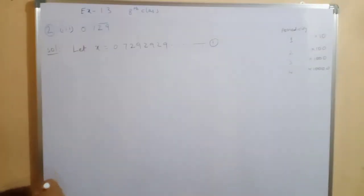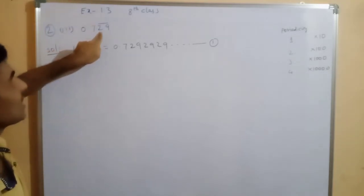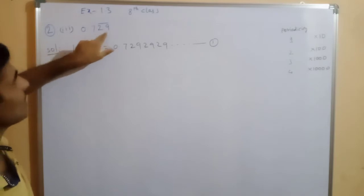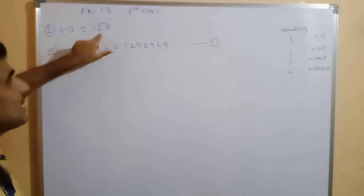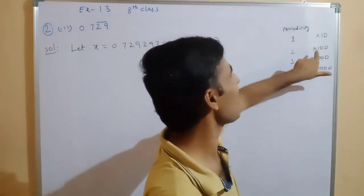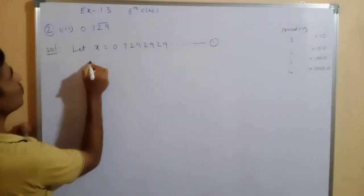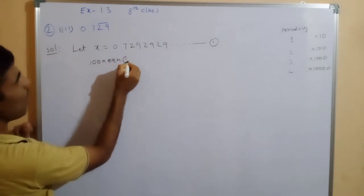Next, see how many numbers are under the bar — two numbers are there. So these two numbers mean the periodicity equals 2. Periodicity equal to 2 means you have to multiply with 100. So now we have to do 100 into Equation number 1.